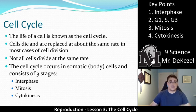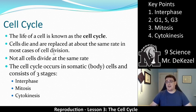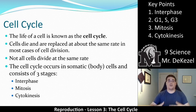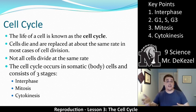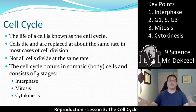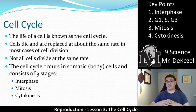The life of a cell is known as the cell cycle. Cells die and are replaced at about the same rate in most cases of cell division. In most places in your body, your cells will live for a while and then die, and they are replaced at the same rate that they die. So once you're fully grown, they don't need to keep making more and more — they generally just stay the same amount within the body.